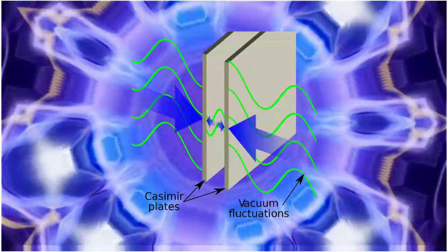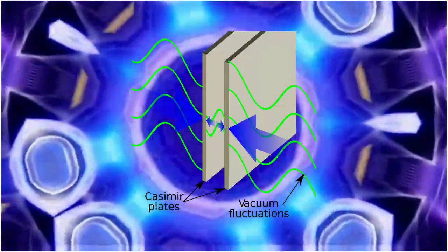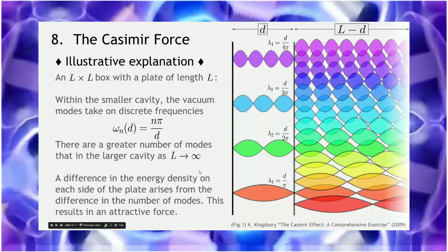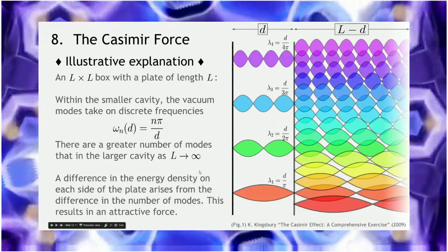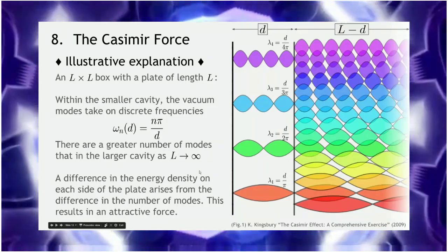Theoretically this can happen, and there is one effect — the Casimir effect — which in quantum field theory states that energy density can be negative relative to ordinary matter vacuum energy. Theoretically, energy can be negative and maintained at that negative state, as mentioned by Kip Thorne and Stephen Hawking. And that is all about wormholes.